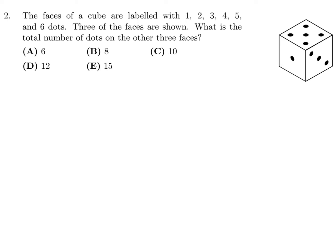The faces of a cube are labeled 1 through 6. Three of these faces are shown — the 5, the 1, and the 3. What is the total number of dots on the other faces? The other 3 faces would be 2, 4, and 6. So 2 dots plus 4 dots plus 6 dots equals 12 dots. The answer is D.